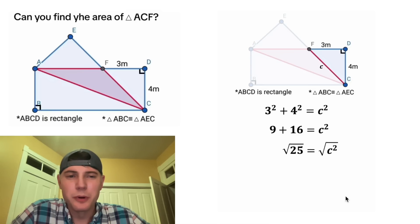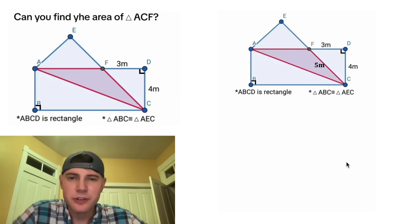9 + 16 = 25, so we have 25 = C². To solve for C, we can square root both sides. Square root of 25 is 5, and square root of C² is C. So now we've figured out that C equals 5, and we can give it a label of meters to match these other ones. What should we do next?